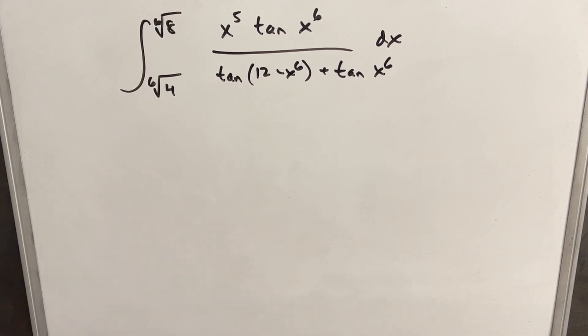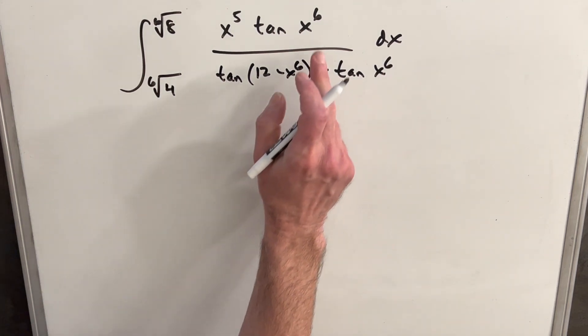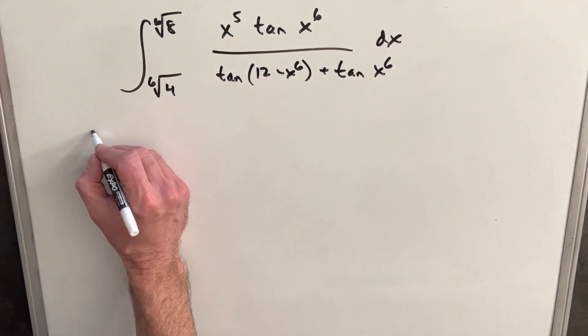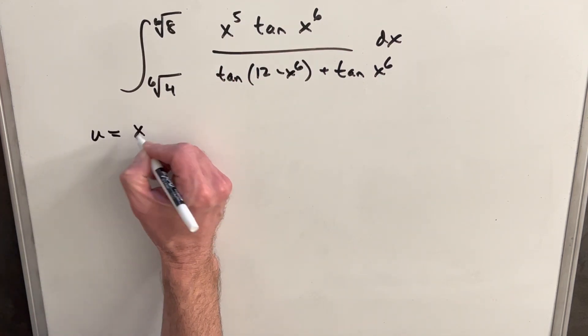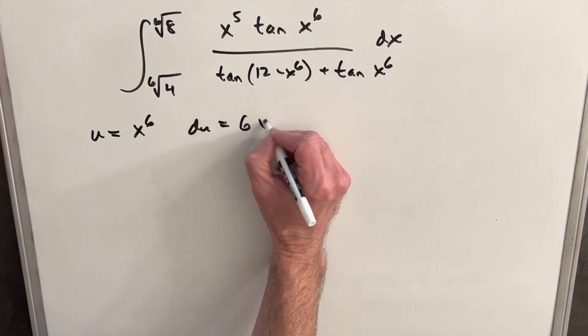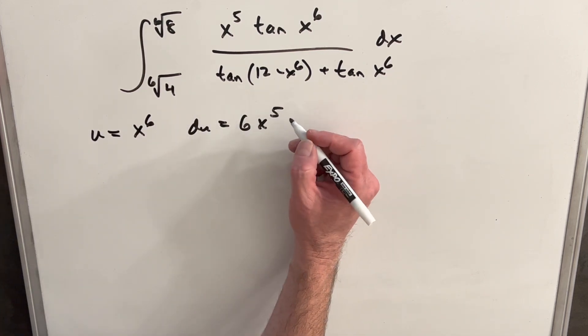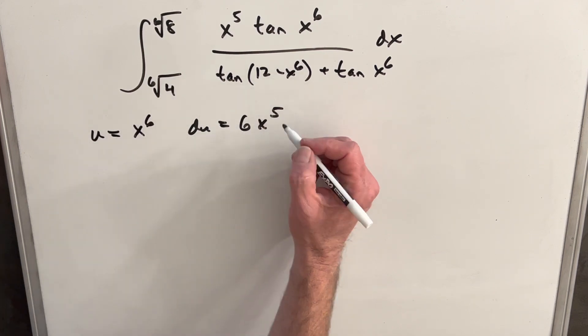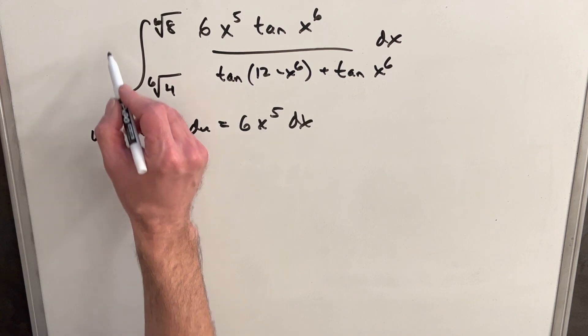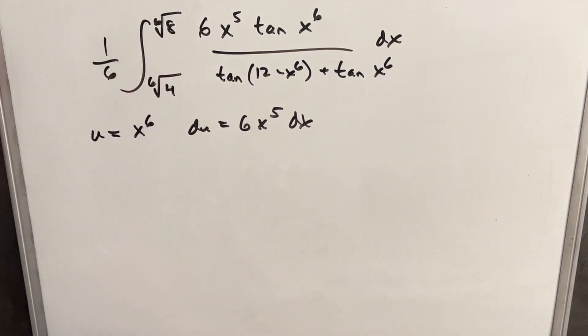So before I do anything, what I want to do is a u substitution, because we just notice the similarity when you have x to the sixth and x to the fifth. That looks like we can do something with that. So if I make my u x to the sixth, then our du is going to be 6x to the fifth dx. Now I'm just going to create a six in front here. We'll bring a one sixth out here so we're not changing the expression.